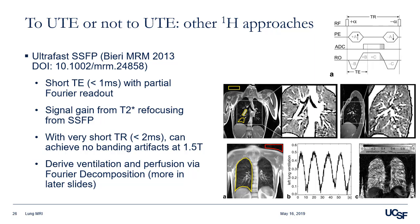I've seen a lot of great abstracts at this meeting on non-UTE-based proton imaging methods. One of the first introduced was an ultra-fast SSFP approach, where you're squeezing your gradients and doing a partial echo to get a short TE, getting a lot of gain from SSFP refocusing. At 1.5T you can get nice images without banding — it's a little harder at 3T. One thing that's exciting is that from these 2D images you can derive ventilation and perfusion maps via Fourier decomposition and similar techniques.